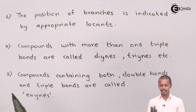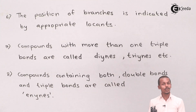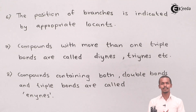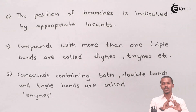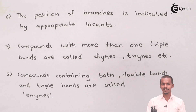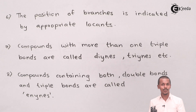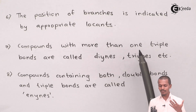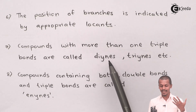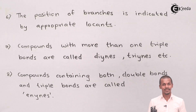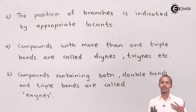The sixth rule states that the position of any branches is indicated by the appropriate locant. Aliphatic alkynes do not have to be straight-chain; they can also be branched, so we must indicate the position of any branch in the parent chain. The seventh rule states that compounds with more than one triple bond are named using prefixes such as di-yne, tri-yne, etc.